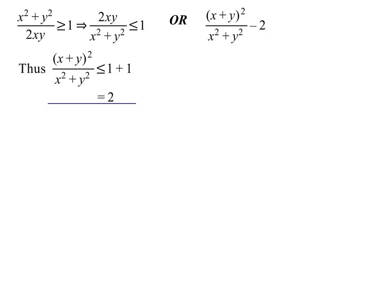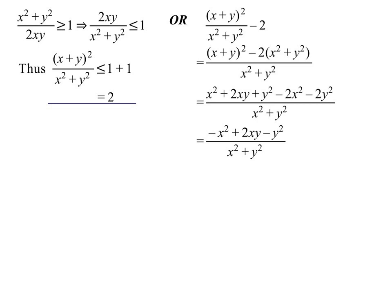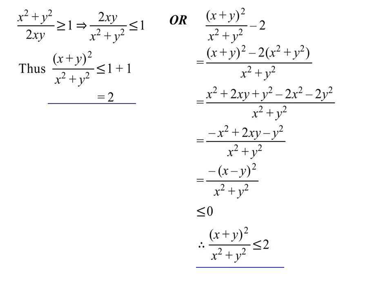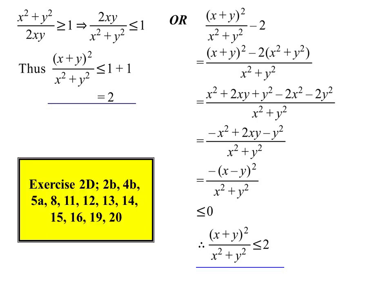Another way to do the same question: pull everything to one side and make one fraction. The numerator tidies up to minus(X² minus 2XY plus Y²), which is minus(X minus Y)², and that is always less than or equal to zero. So the whole expression minus 2 is ≤ 0, meaning the expression is ≤ 2. That's actually quicker — not everything has to be proven with AM-GM. We've got a handful of practice questions to try next.